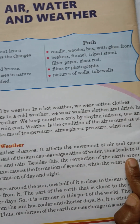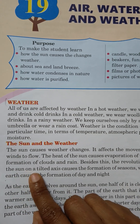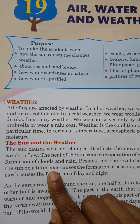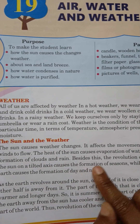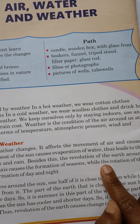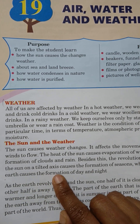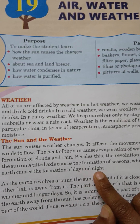Besides this, the revolution of the earth around the sun on a tilted axis causes the formation of seasons, while the rotation of the earth causes the formation of day and night.